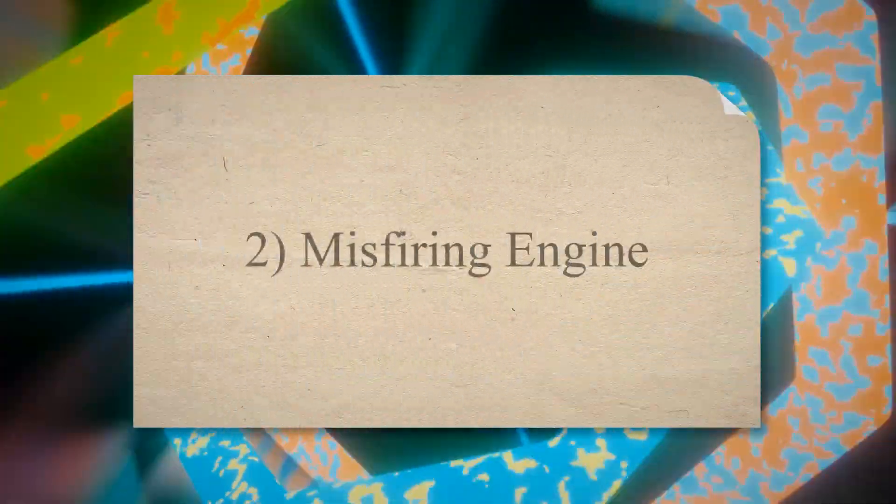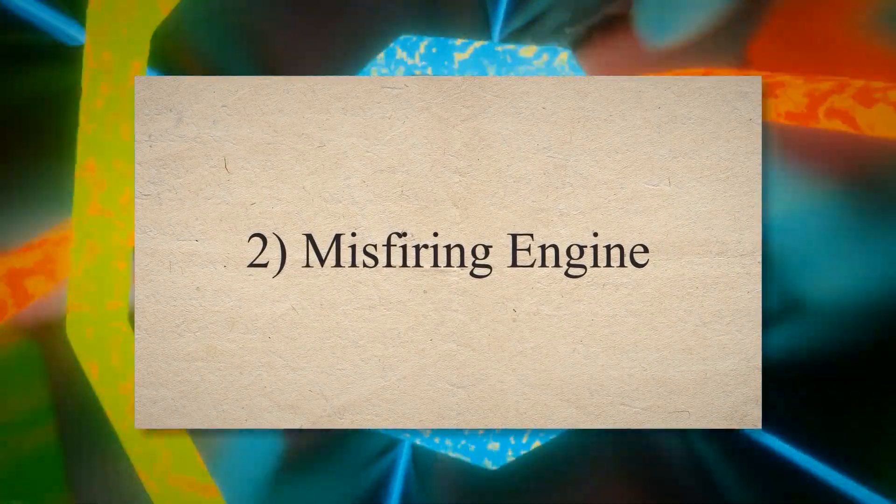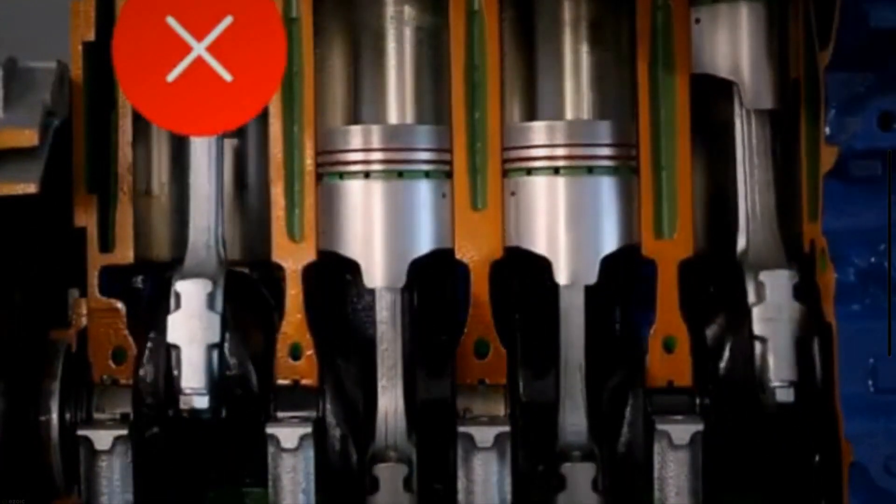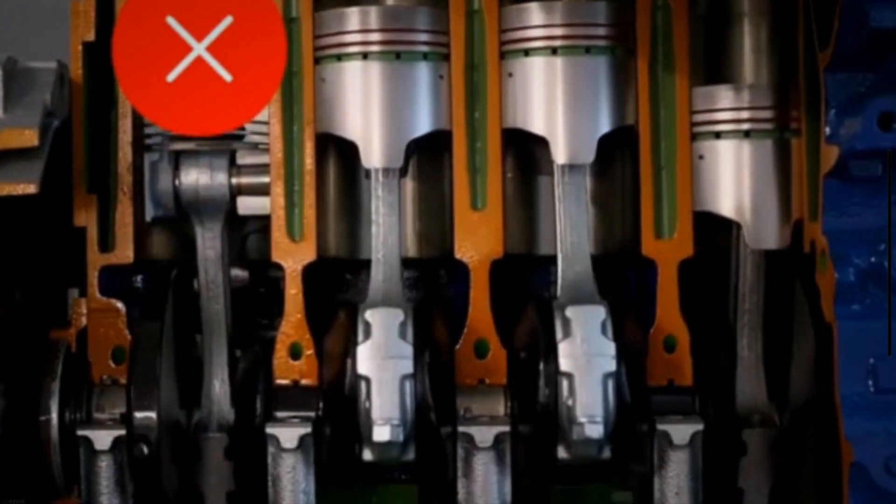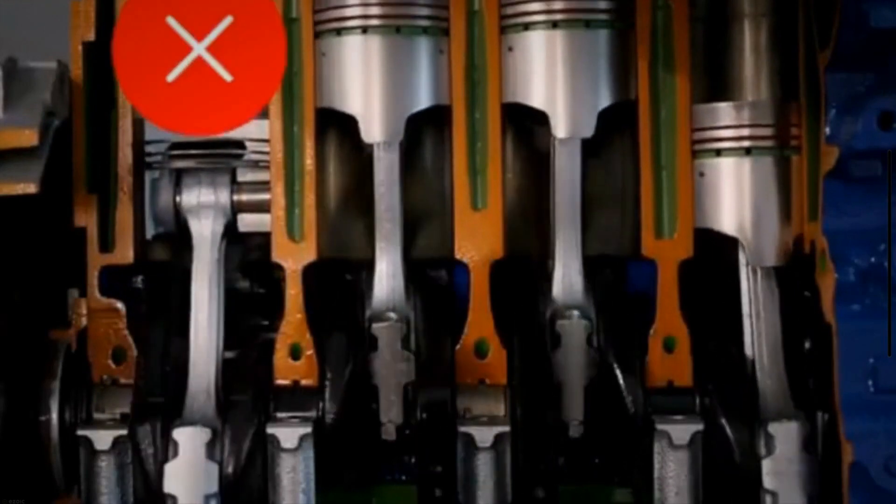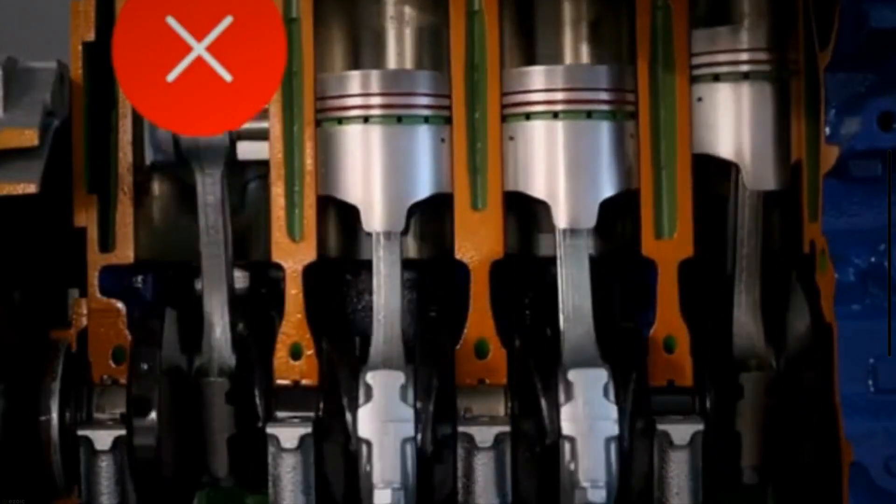Misfiring Engine. When the ignition coil doesn't work correctly, the engine is going to misfire. A misfiring engine occurs because the air-fuel mixture in the cylinder can't ignite. Misfiring engines create a hesitation or jerking feeling, especially as you attempt to accelerate. You can also feel the vibration throughout the cabin as the misfire gets worse.